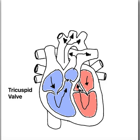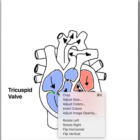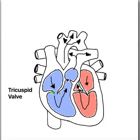We're going to be looking at the tricuspid valve, and I'll just show you where that is. So it's this valve here. The tricuspid valve is situated between the right atrium and the right ventricle.